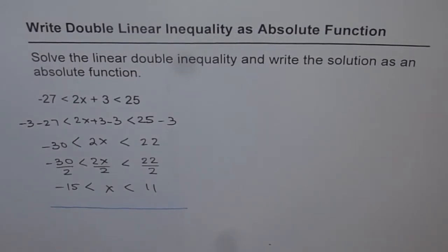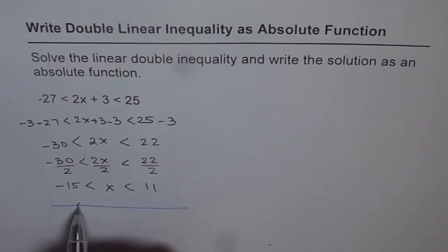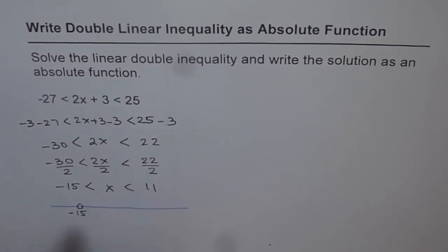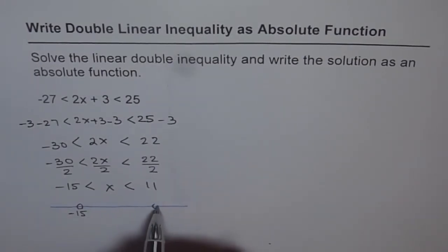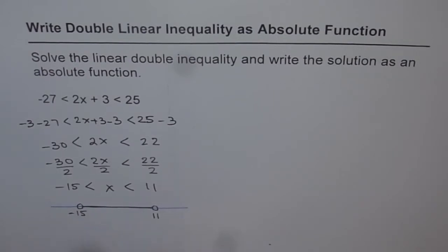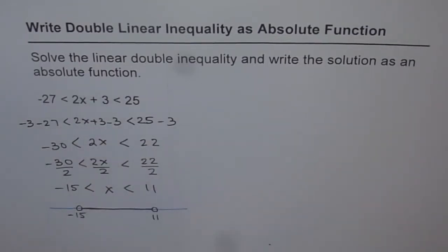In normal cases, you represent the solution on a number line. We put an open circle at minus 15 since x is strictly greater than minus 15, and another open circle at 11 since x is strictly less than 11. The solution lies in between. But the real problem here is to write the solution as an absolute function.